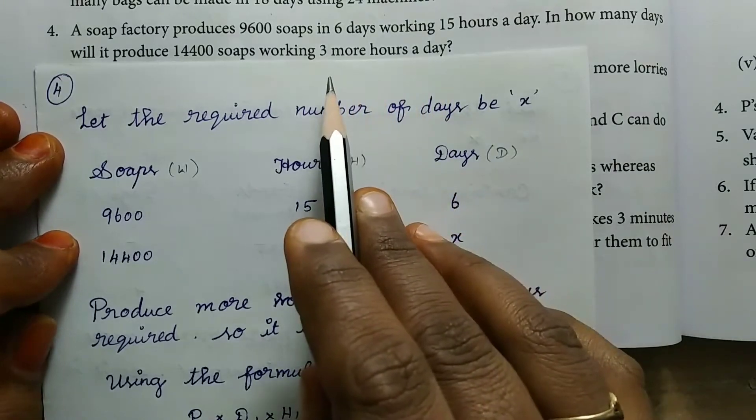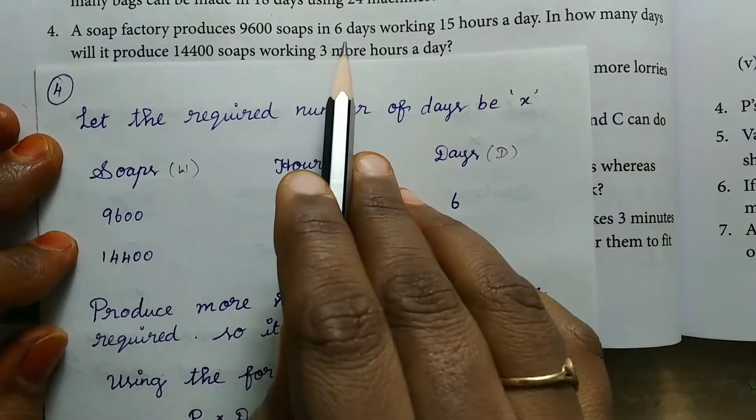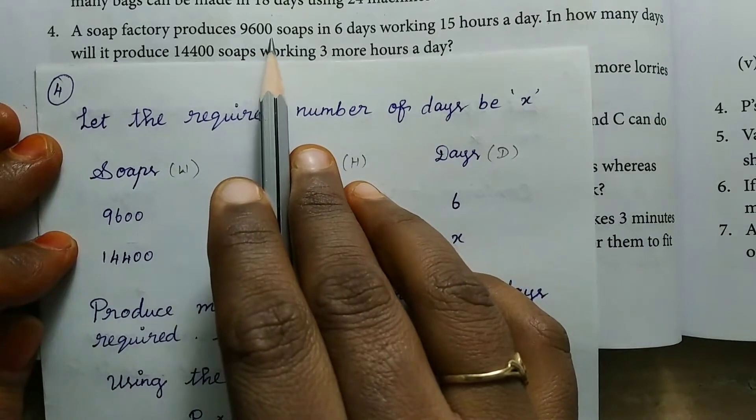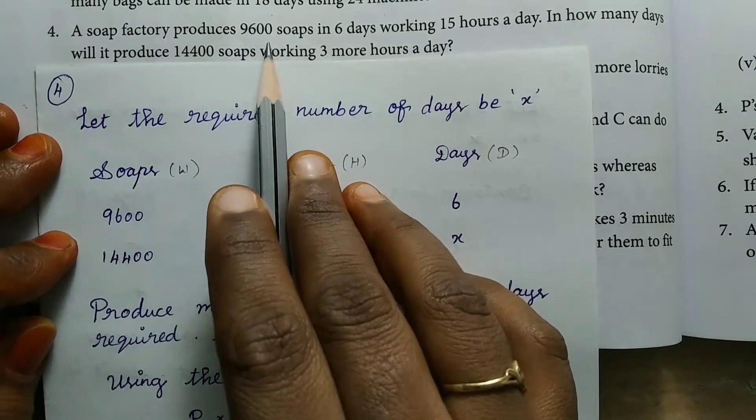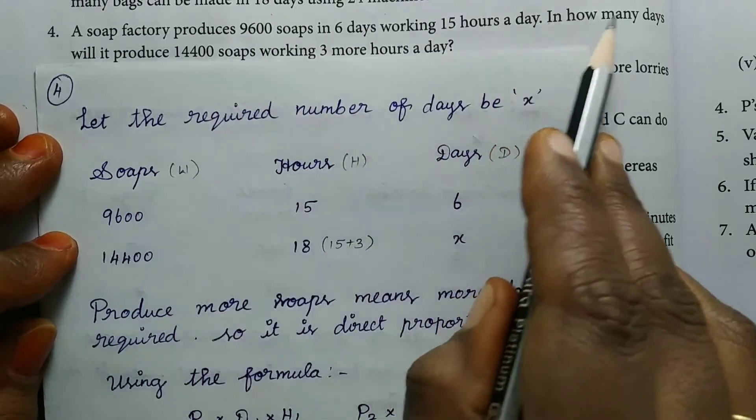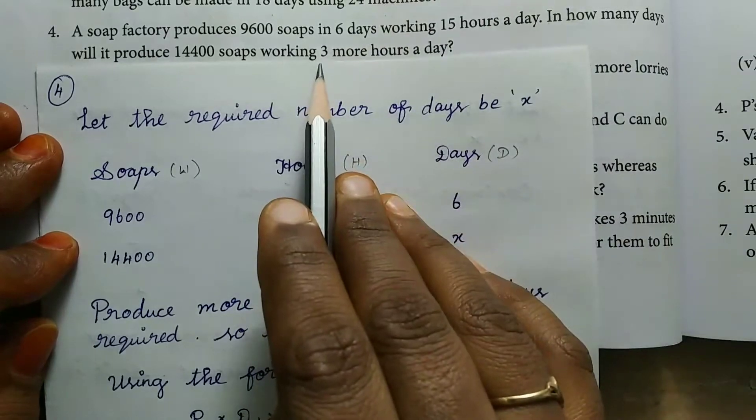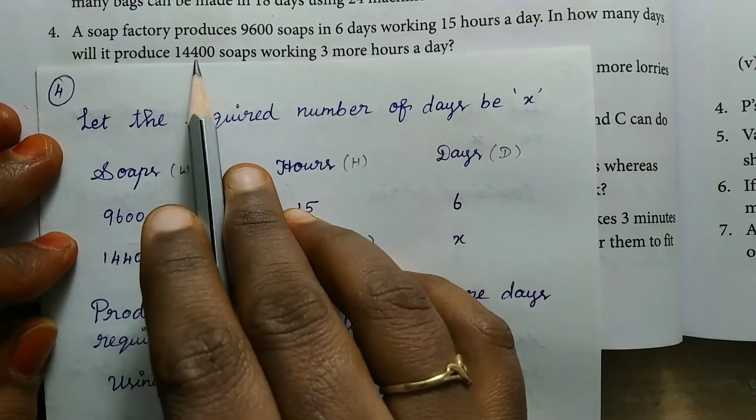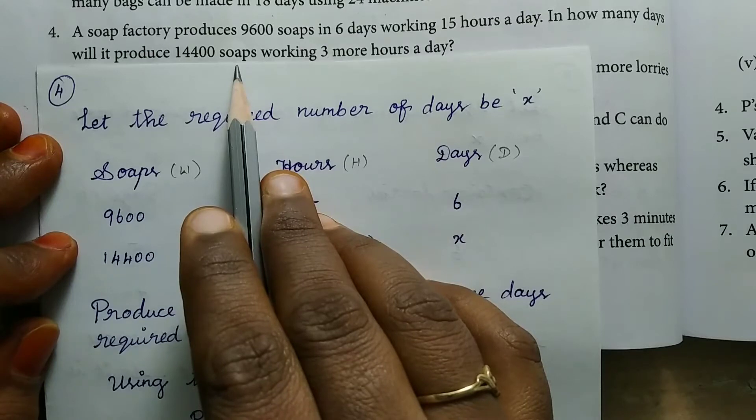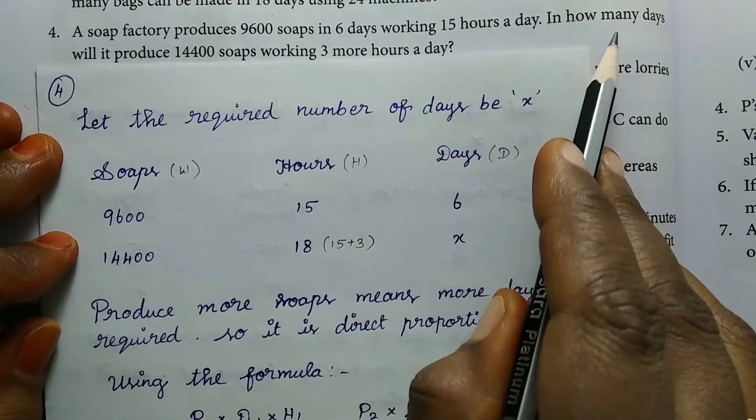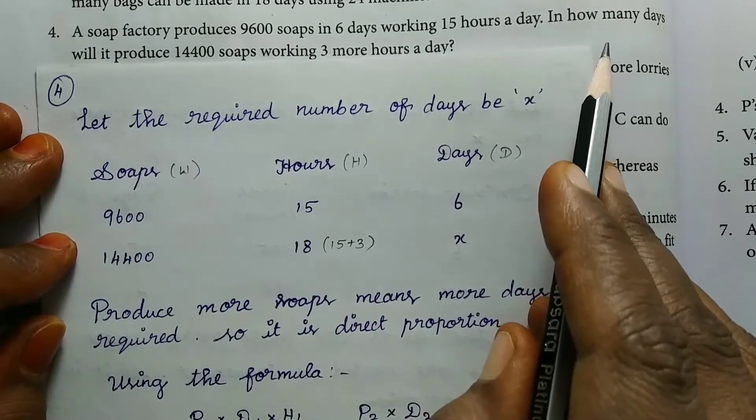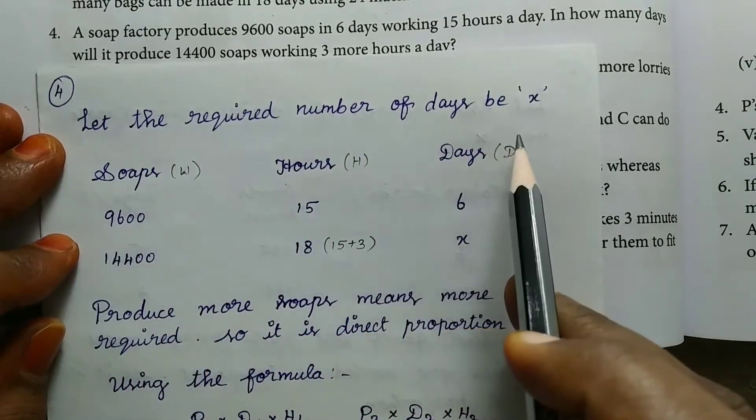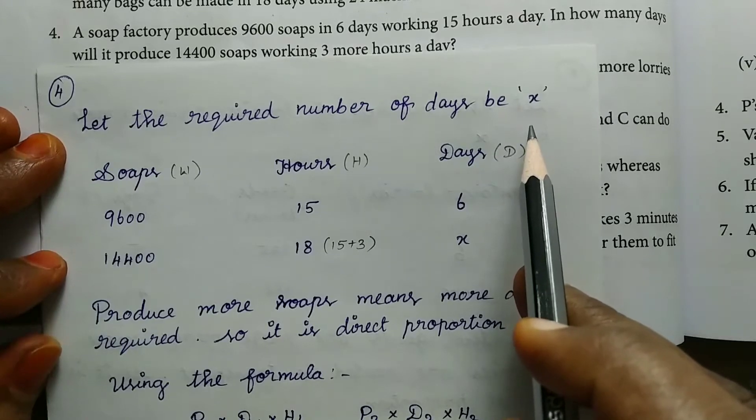Here is a soap factory that produces soaps. In 6 days working 15 hours, 9600 soaps can be manufactured. Let's see how many days will it take to produce 14400 soaps if working 3 more hours. The unknown value, the number of days, we'll consider as X.